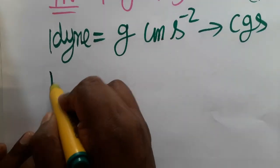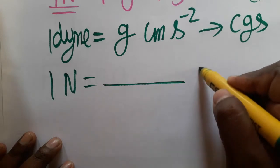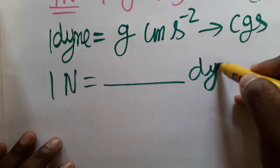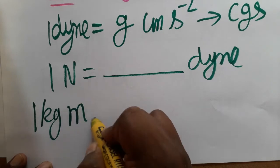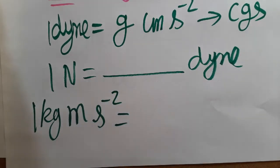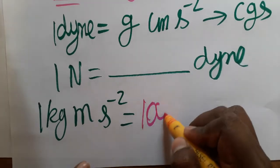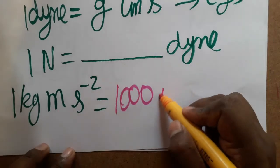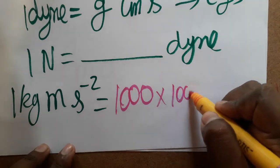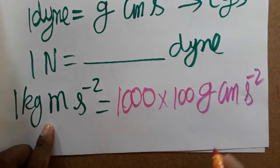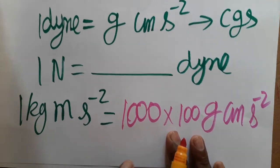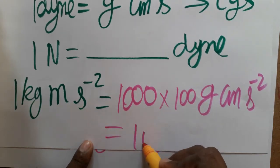Our question is: 1 newton equals how many dyne? We know 1 newton = kg·m·s⁻². Now substitute: 1 kg = 1000 grams, and 1 meter = 100 centimeters. So we replace kg with 1000 g and meter with 100 cm, giving us 1000 × 100 g·cm·s⁻².